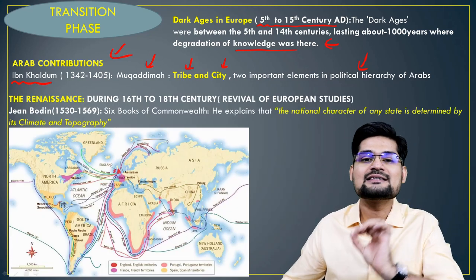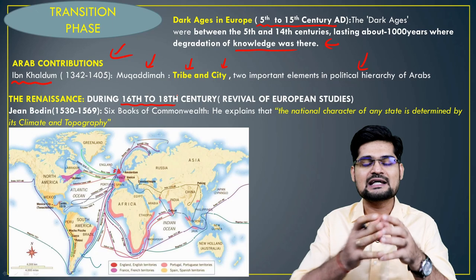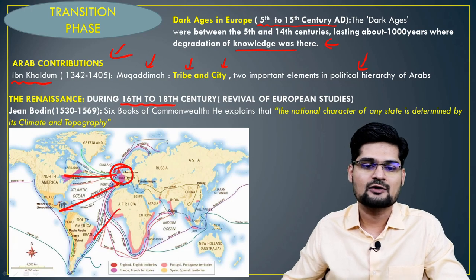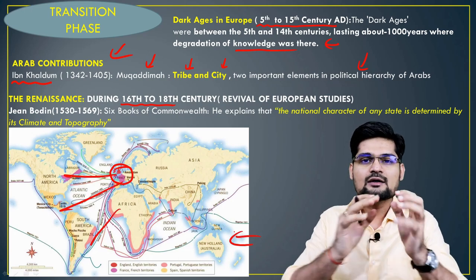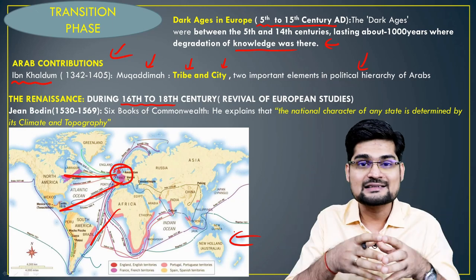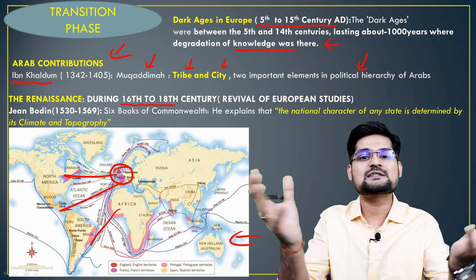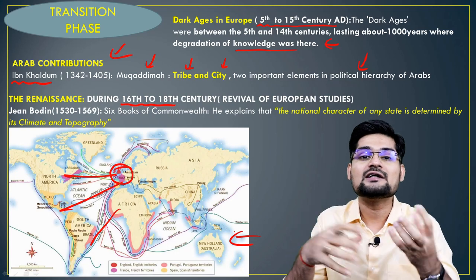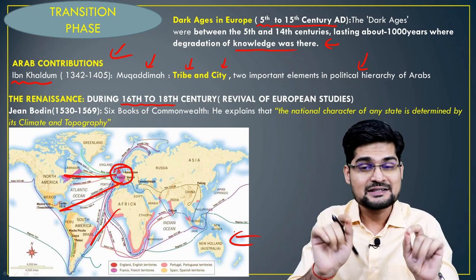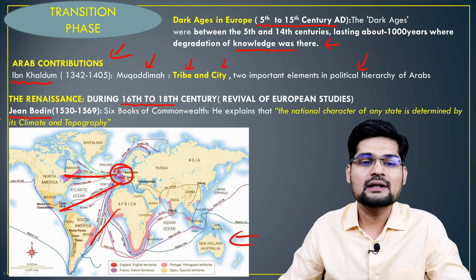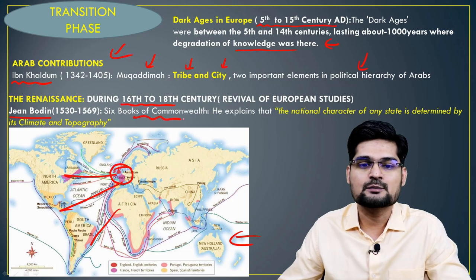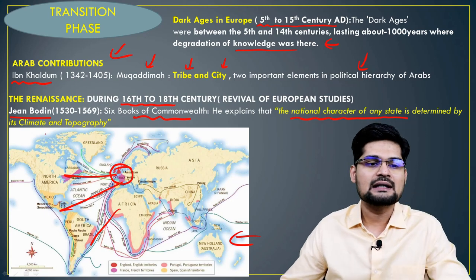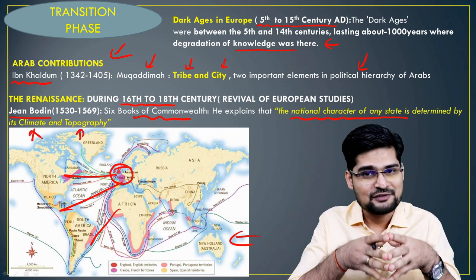Then came the Renaissance period — from the 16th to 18th century, the age of colonialism after the Age of Discovery — where the entire world was traveled and discovered. People could travel across oceans, and newer territories and colonies were built, vastly expanding the known world. With this, political geography developed in terms of more concepts and theories, though it was still not established as a formal subject. Scholar John Bodin wrote six books on Commonwealth, explaining that the national character of any state is determined by its climate and topography — geographic influence on politics.